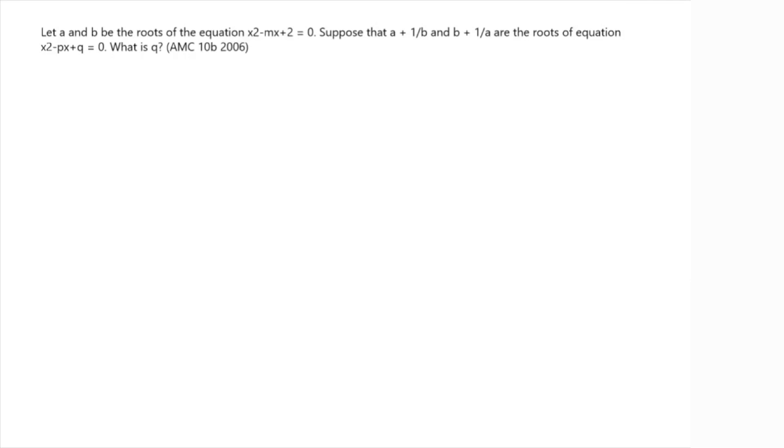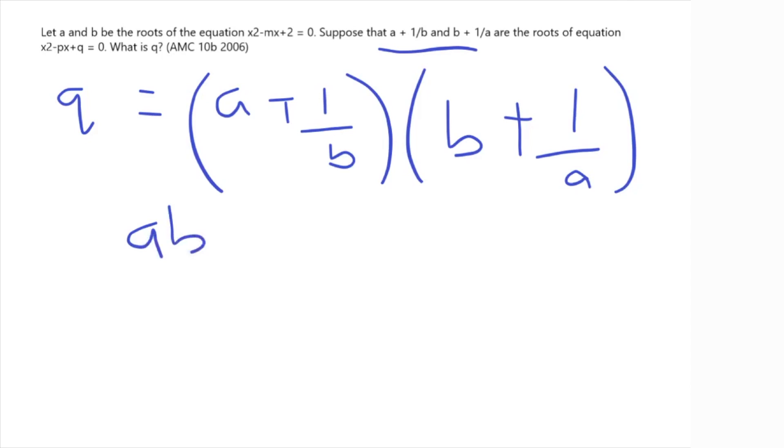Alright, so the next problem we have says that let a and b be the roots of the equation x squared minus mx plus 2 equals 0. Suppose that a plus 1 over b and b plus 1 over a are the roots of the equation x squared minus px plus q is equal to 0. What is q? So clearly, since this has to do with the roots of the equation, this probably uses Vieta's in some way. And we're given that we have to find q. So we know that q is actually equal to the product of the roots of this equation. So (a plus 1 over b) times (b plus 1 over a), and then if we simplify this, we get ab plus 1 plus 1 plus 1 over ab.